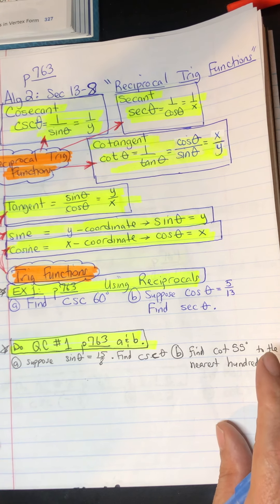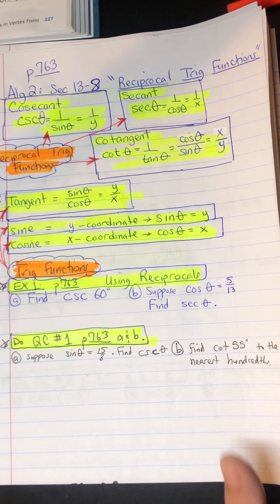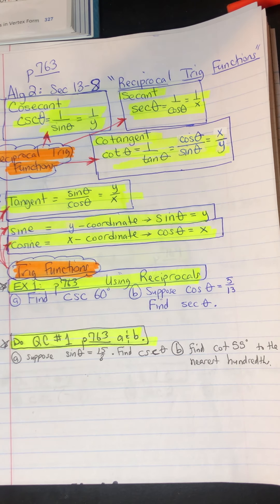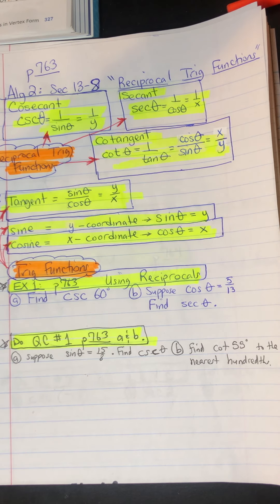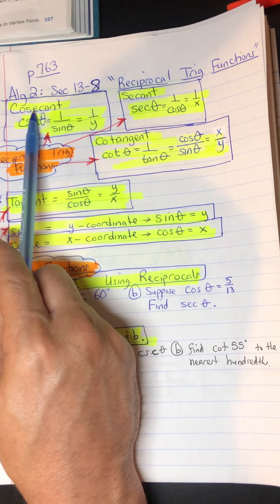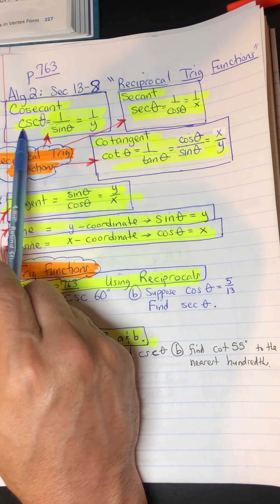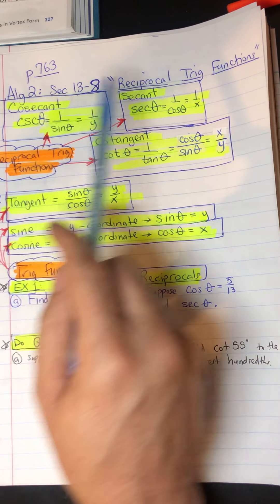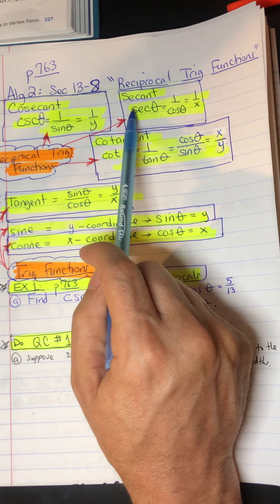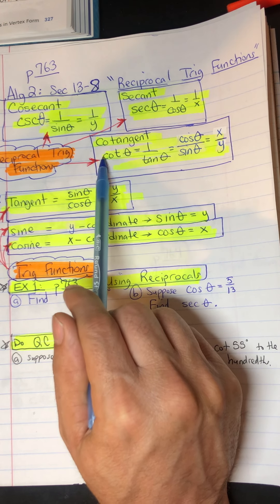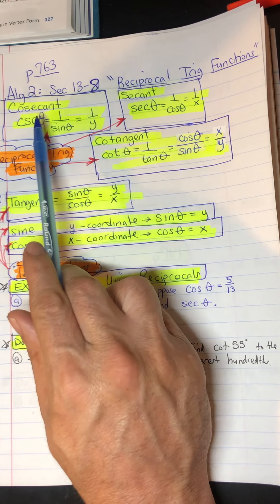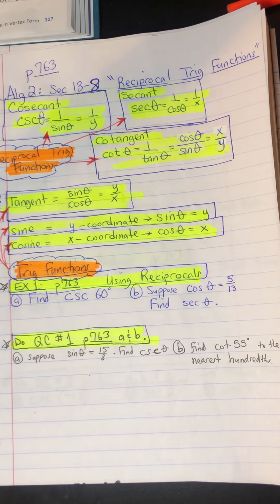Now that we know how to find sine, cosine, and tangent — the trigonometry functions — we can apply that knowledge to find the reciprocal trig functions. The reciprocal trig functions are cosecant (abbreviated CSC), secant (abbreviated SEC), and cotangent (abbreviated COT).